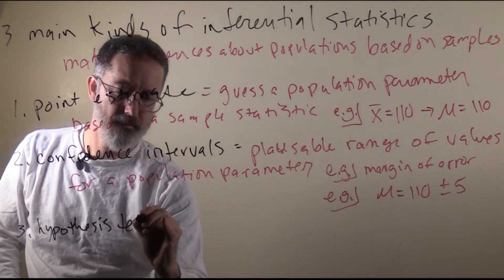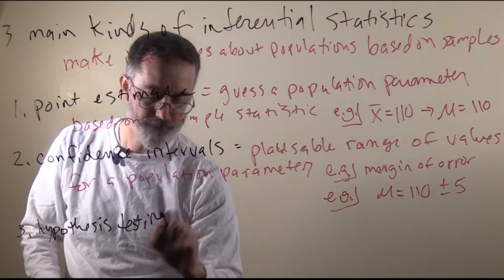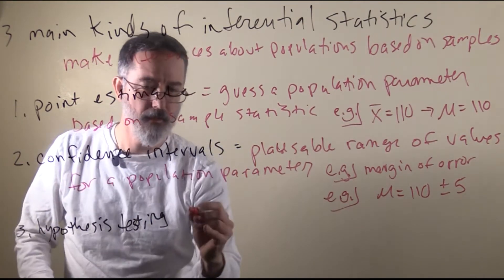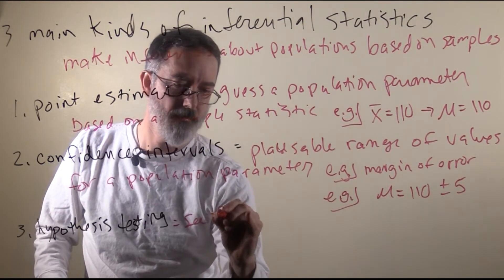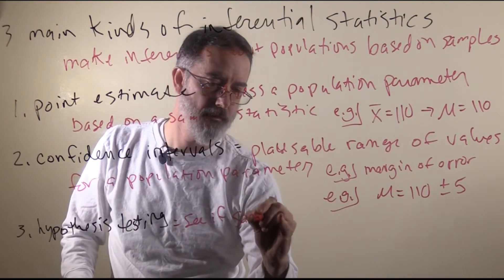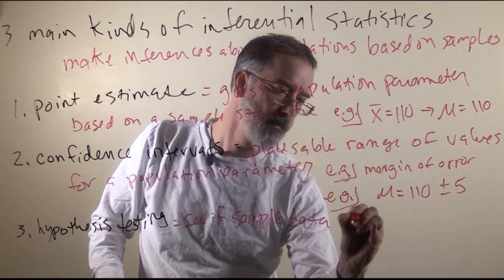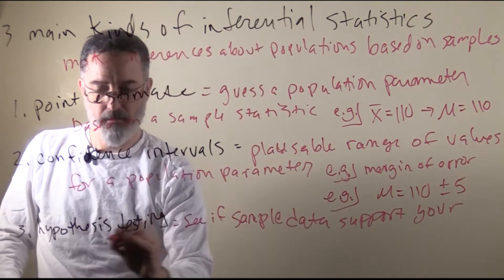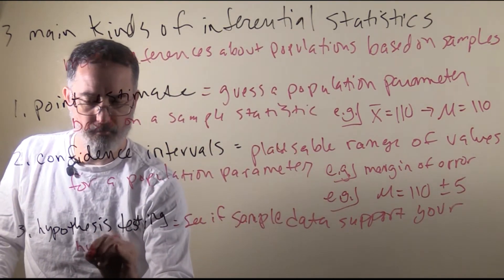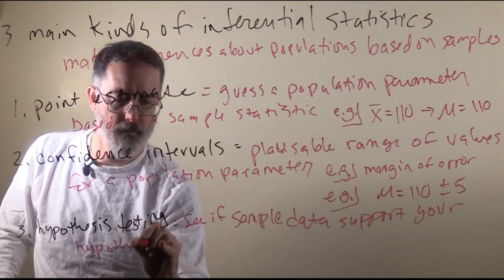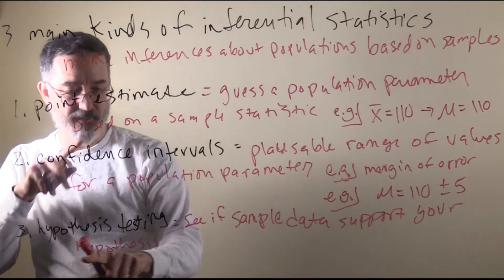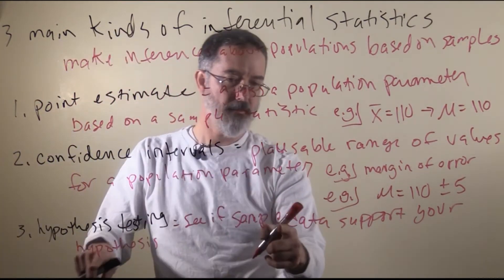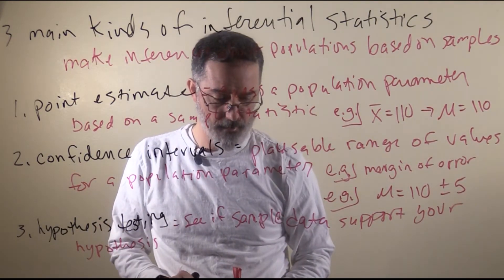And the third main kind of inferential statistic that we are going to talk about in this class is called hypothesis testing. In here, you see if your sample data support your research question, your research hypothesis. That is about a state of the world, so this is about a population. But you just look at a sample to see if the sample is consistent with your hypothesis or not.